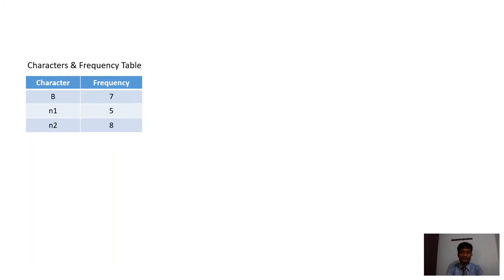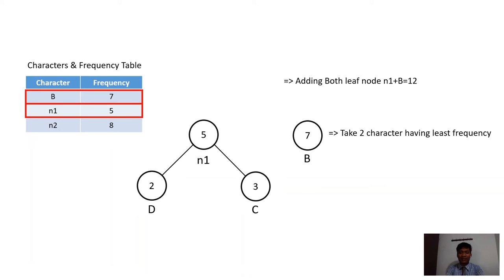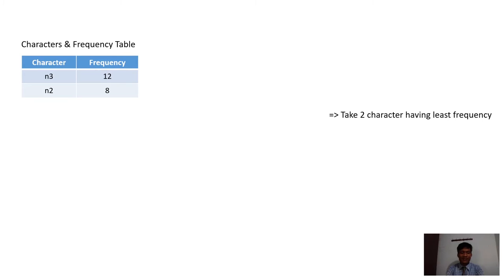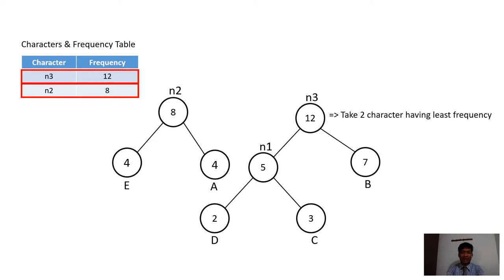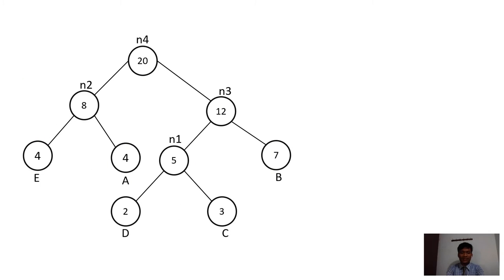Update the table. Again, take the 2 characters with least frequency: YAN1 and B. Add both leaf nodes YAN1 and B, which equals 12, and give the parent node the name YAN3. Update the table. Take the 2 characters with least frequency: YAN2 and YAN3. Add both leaf nodes, which equals 20, and give the parent node the name YAN4. This is the tree obtained from the Huffman method, also called the Huffman tree.